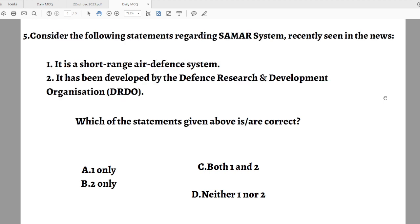Question number five: Consider the following statements regarding the SAMAR system recently seen in news. Statement 1: It is a short-range air defense system. Statement 2: It was developed by the DRDO. Which of the statements given above are correct? Options are: A. One only. B. Two only. C. Both. D. Neither.